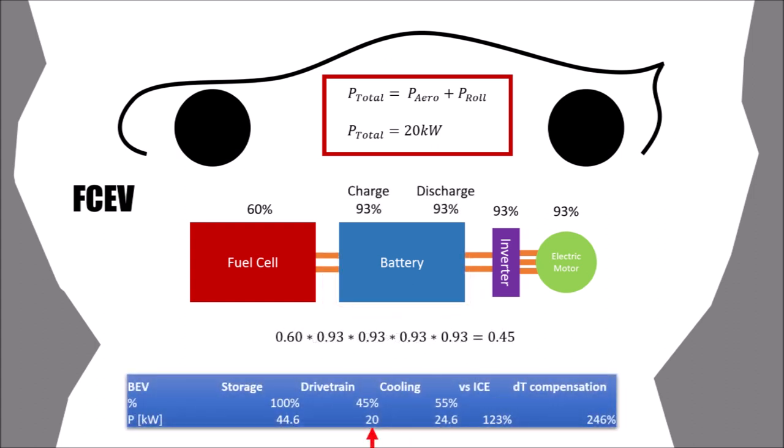If we now need 20 kilowatts again to drive our car, we need to input 45 kilowatts into the system. 25 kilowatts will have to be cooled by the cooling system. We don't have the convenience here that one third of the heat will leave the car through the exhaust. All components are water cooled and the heat stays within the car and needs to be cooled by the cooling system.